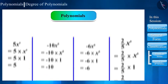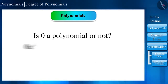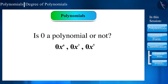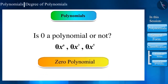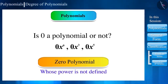Is the number 0 also a polynomial? Yes — 0 can be expressed as 0 times x⁰, or 0 times x³, or 0 times x⁵, or as a power of any variable. So 0 is called the zero polynomial, whose degree is not defined.